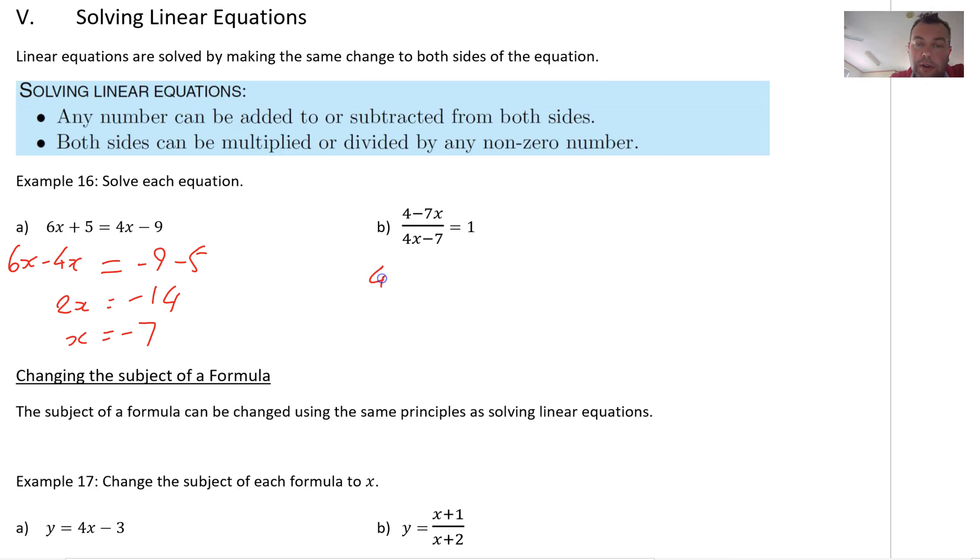So that gives me 4x minus 7 times 4 minus 7x. And that's going to cancel over 4x minus 7. So that they cancel out. You see, I don't have my fraction anymore. And I get 1 times 4x minus 7. Can I just say 4x minus 7? Okay, so 4 minus 7x equals 4x minus 7.